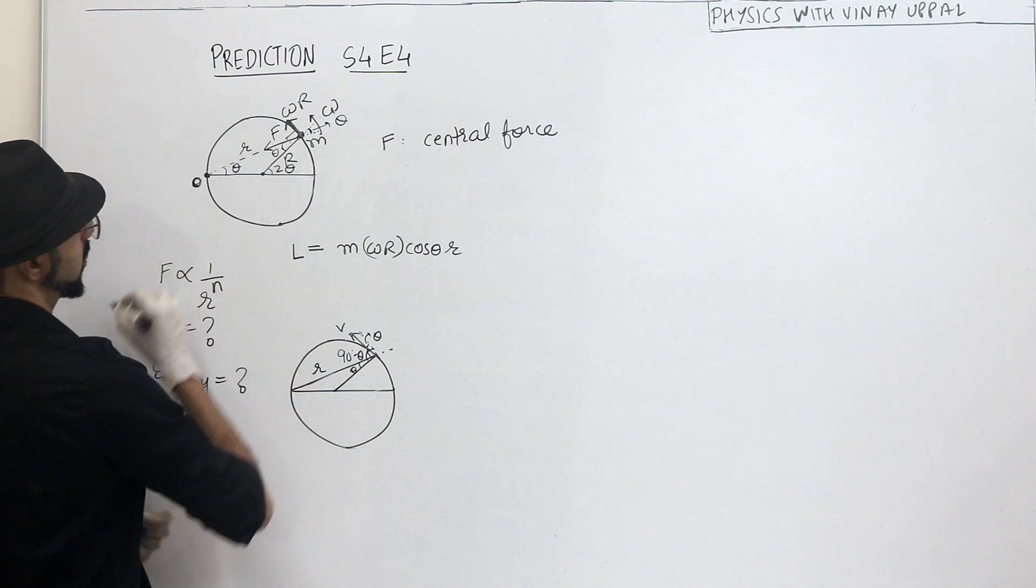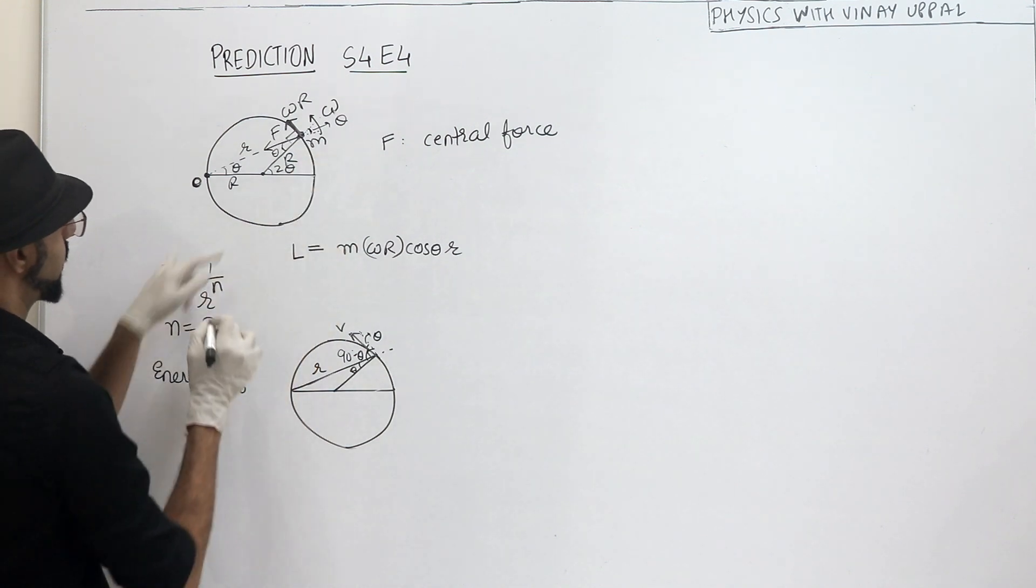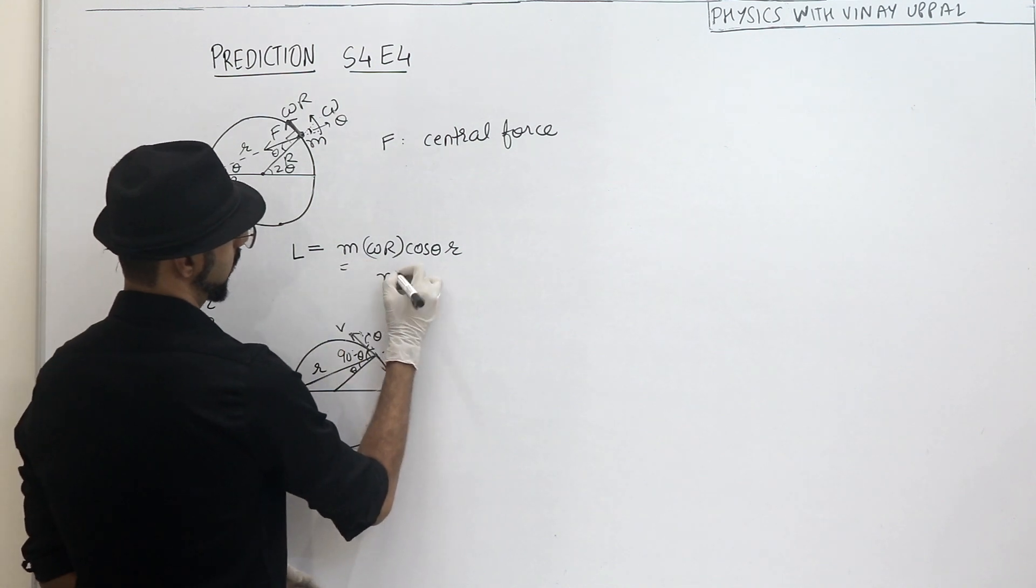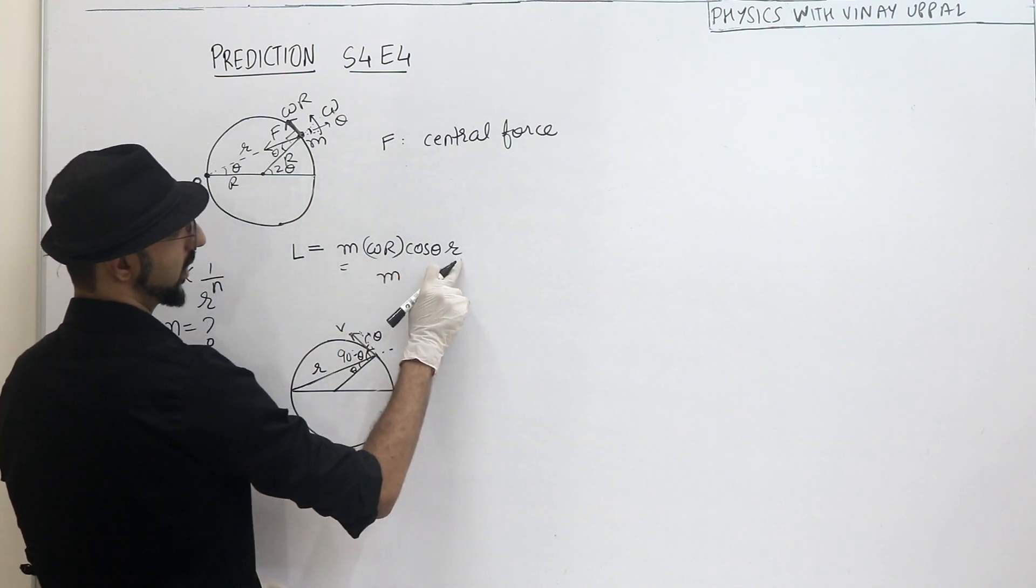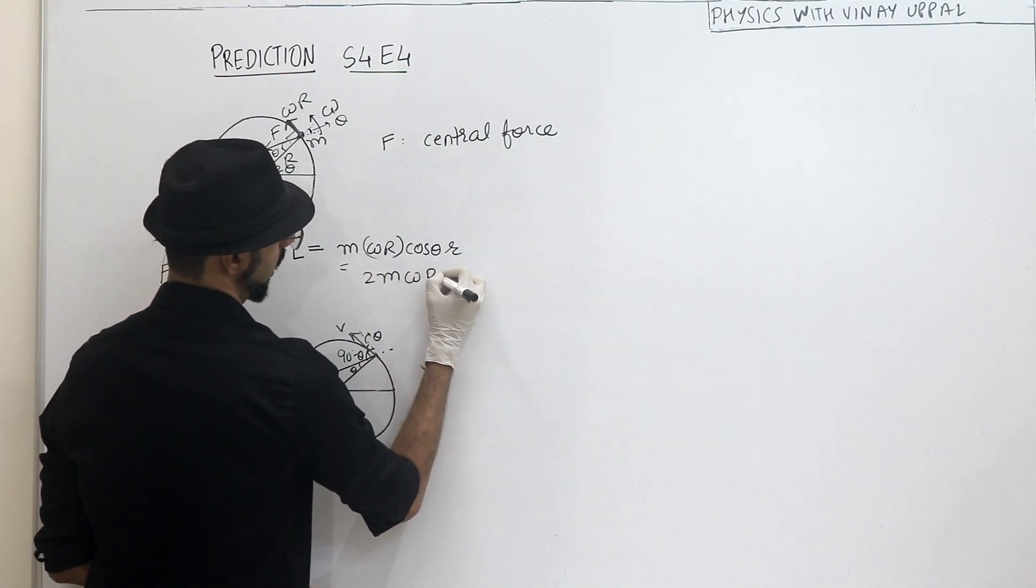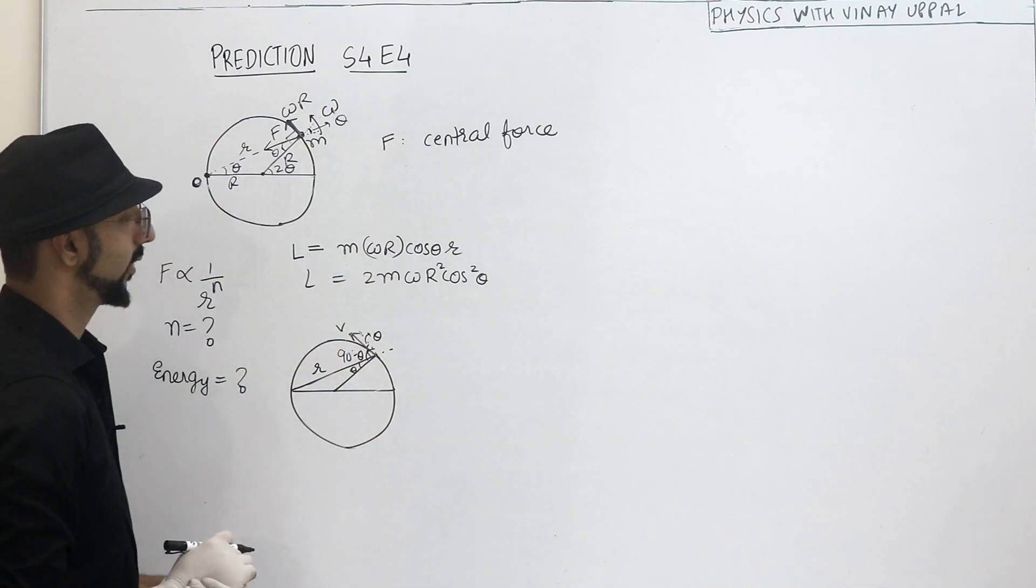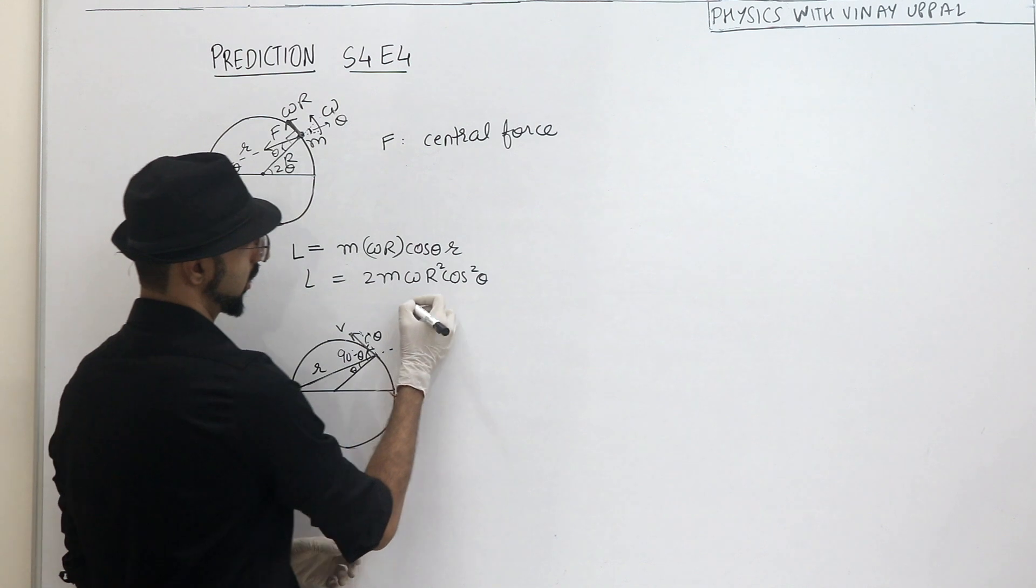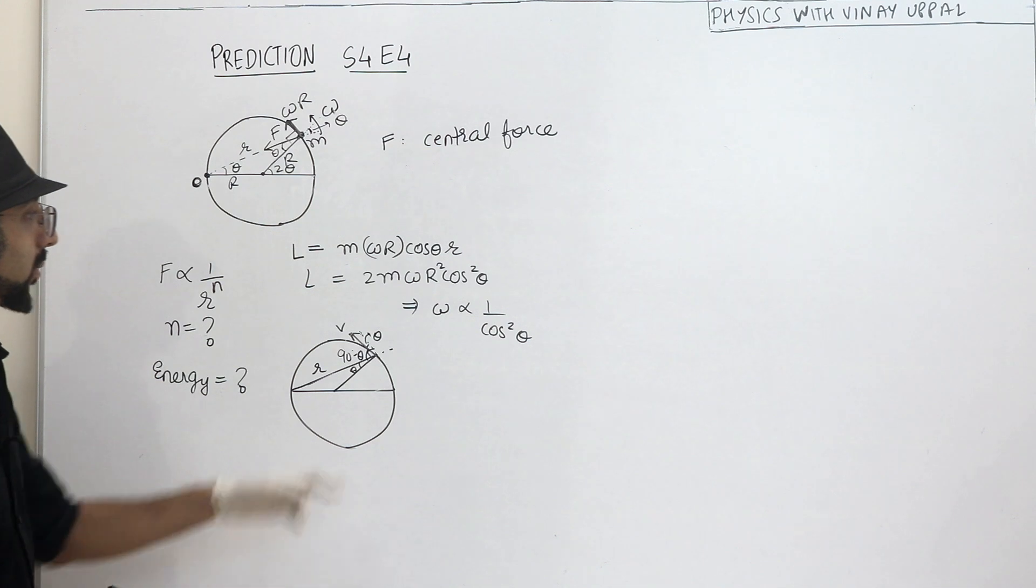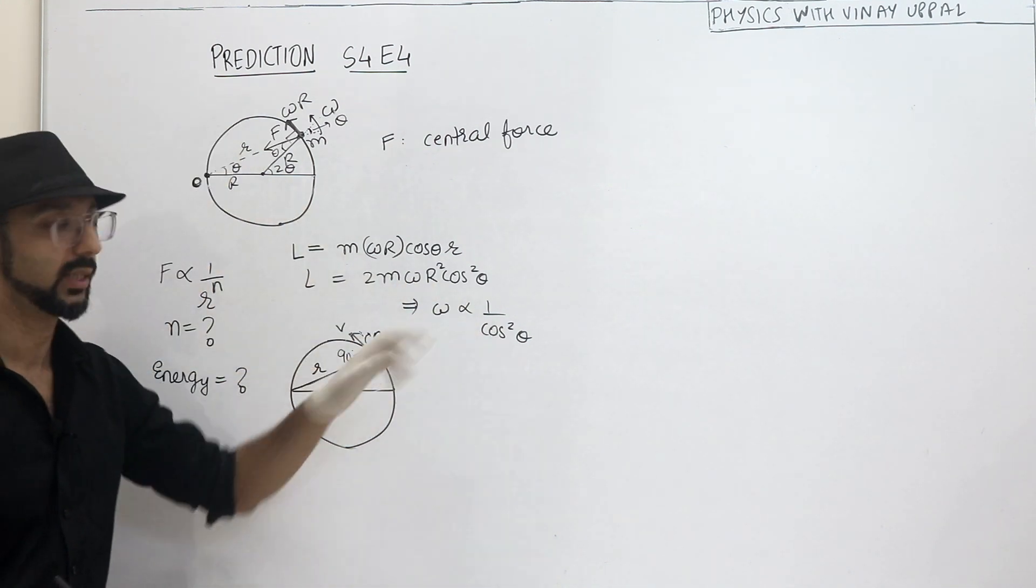And what can you write for small r? I can write small r as 2r cos theta, right? You can write it as diameter, chord length, diameter into cos theta, correct? So this will be, small r equals 2r cos theta. So 2m omega r square cos theta. So if I ask you omega as a function of theta, can you see that omega is proportional to 1 by cos square theta, right? Because L is constant, m r is a constant, so as theta varies, omega will vary this way.